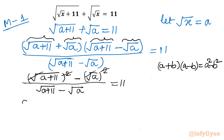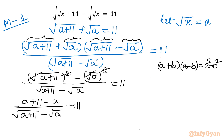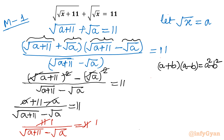What is left? In the numerator we have (a plus 11) minus a, which gives 11. So we have 11 over (square root of (a plus 11) minus square root of a) equal to 11. We can cancel the 11s, and cross multiplying gives us: square root of (a plus 11) minus square root of a equals 1.